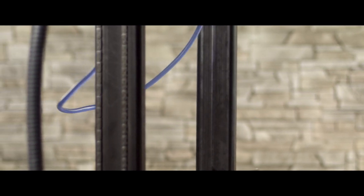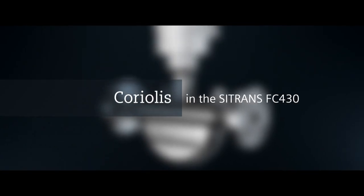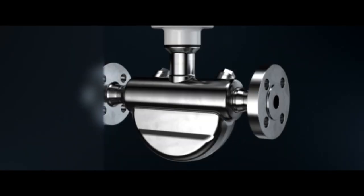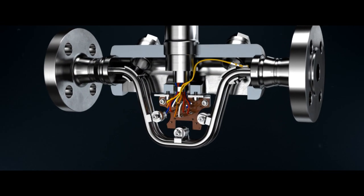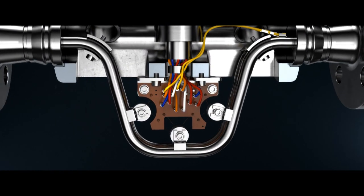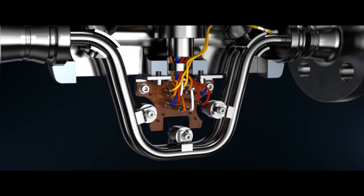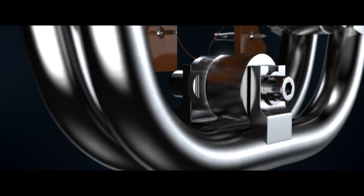The Siemens Sitrans FC 430 flow meter functions according to the same principle. Two symmetric metal tubes are set vibrating. This is ensured by a driver coil in the central section.